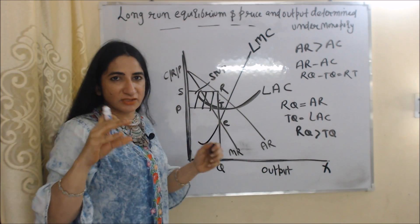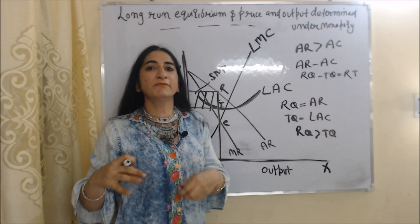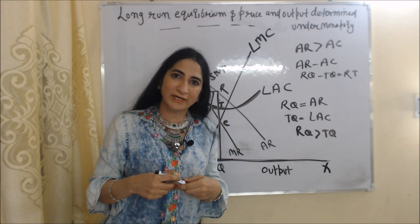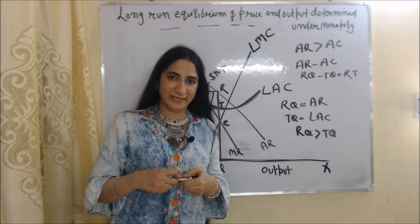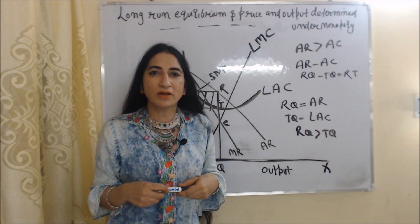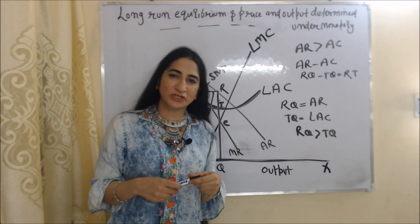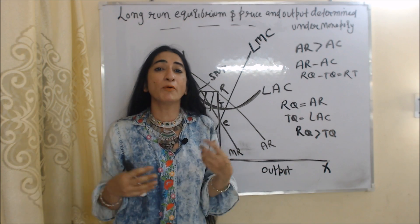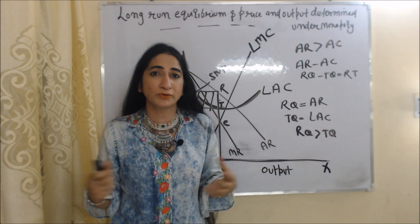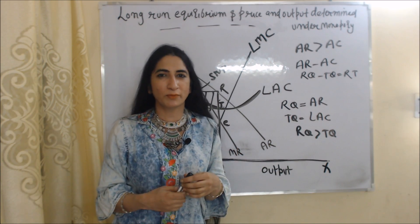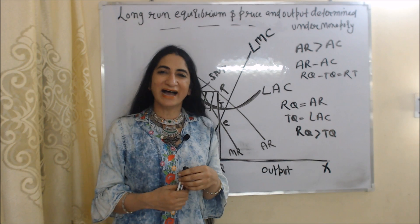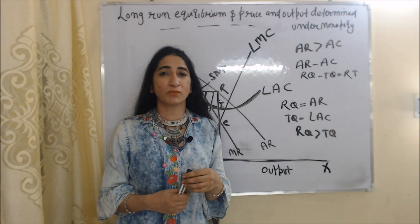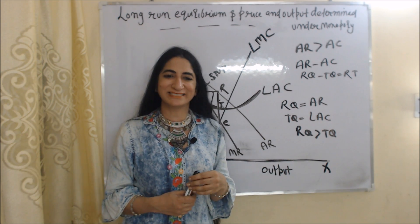This is all about short-run and long-run equilibrium and how price and output are determined in a monopoly market. I think you got it — thank you so much for watching this video. Bye, take care.